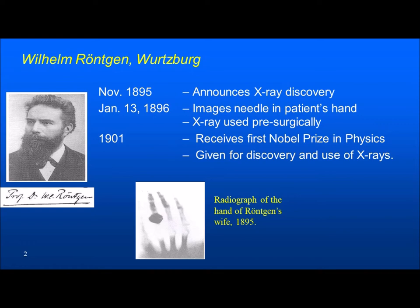The very next year, in 1896, Röntgen presented it at a conference of anatomists and told them that they could see the internal organs without surgically opening the patient's body. It was used for pre-surgical procedures the very next year. And in the year 1901, Röntgen received the first Nobel Prize in Physics for the discovery and use of X-rays.